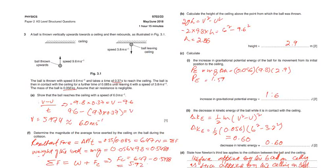When the ball is moving upward, g will be minus 9.8. The speed is calculated as 5.974, approximately estimated to 6.0 meters per second.